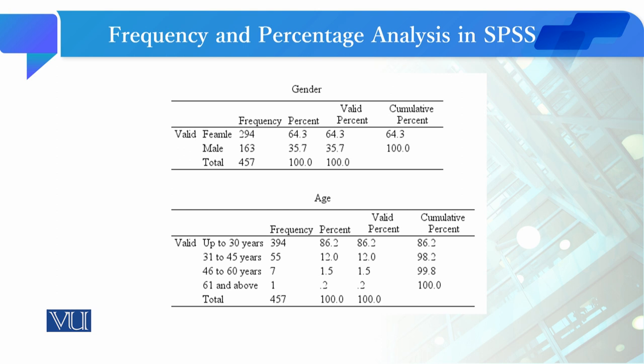Valid percentage means to say کہ آپ کے data میں exact percentage کیا ہے۔ اور cumulative percentage وہ ہوتی ہے کہ ہر category کے بعد جب آپ دو categories کی percentage کو accumulate کر لیتے ہیں تو اسے cumulative percentage کہتے ہیں۔